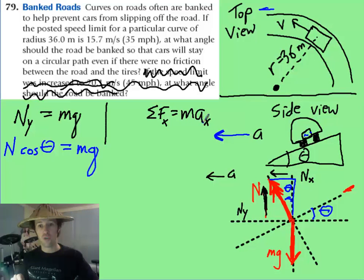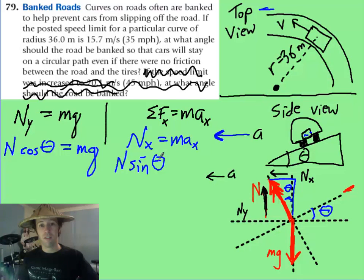And then my centripetal force is the component of the normal force, which I am going to call n sub x, which can also be thought of as n sine theta equals m a to the x. Now, my goal is to find what the angle is that makes this all possible. I don't know, unfortunately, what the acceleration is yet, though. So I've got to back up a little bit, and I need to find that acceleration.